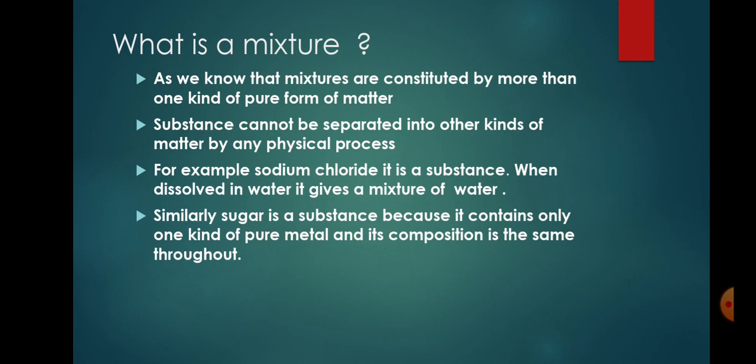A mixture contains more than one kind of pure form of matter. Like milk, it contains water, fat particles, and protein particles. A pure substance cannot be separated into other kinds of matter by any physical process. For example, sodium chloride is a pure substance — it has only one kind of particle. But when dissolved in water, it gives a mixture. Similarly, sugar is a pure substance because it contains only one kind of pure material.